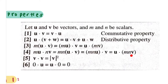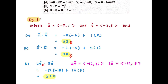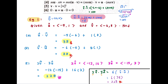Now let's demonstrate with question c. The question asks for 2v dot 3u. First, find 2v by multiplying both the i and j parts of v by 2, giving negative 12 and 16. Then find 3u by multiplying vector u by 3, giving negative 15 and 3. Now do the dot product: take the i parts, negative 12 times negative 15, and add 16 times 3. This gives 228.